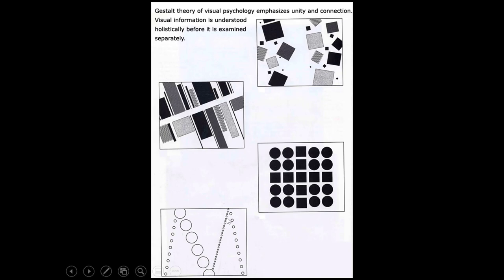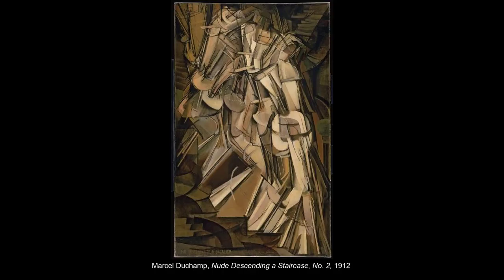Most of us are going to look at all of these circles and instead of calling it '76 little circles,' we're going to say 'four lines made out of circles,' or many of us will go one step further and see an M made out of circles. A gestalt is something your brain uses to interpret everything together — so I understand where the naked lady is even if she's depicted as a series of component parts.